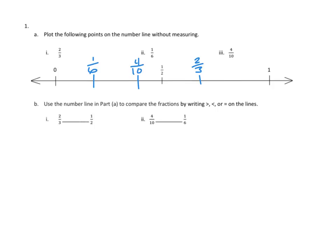So now that we've got those on our number line, let's see if those make sense. Zero, one-sixth is smaller than four-tenths, which is a little smaller than a half, and then two-thirds is greater than a half, and then of course, one is bigger than all the other fractions there. Let's take a look at 1b.